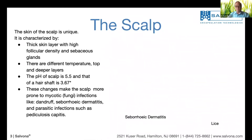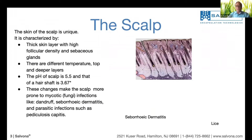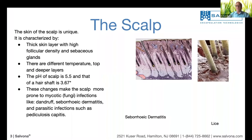We are dealing with an environment that changes in both temperature and pH. These conditions of fluctuating temperature and pH are very favorable for the growth of different types of fungi and bacteria, causing different diseases such as dandruff, seborrheic dermatitis, and even lice. This picture shows the different hair follicles and sebaceous glands.